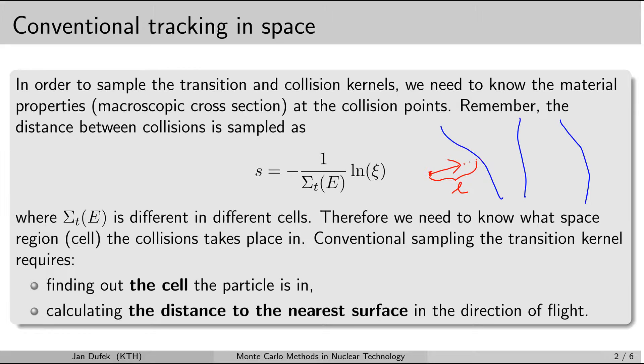So far we have not talked about how the Monte Carlo code finds out the cell in which the particle is located. It needs to locate the cell in order to find out its material and obtain the total macroscopic cross-section. And we also didn't speak yet about how to calculate the distance to the closest interface. So we are going to look at these two problems.